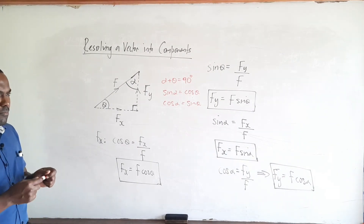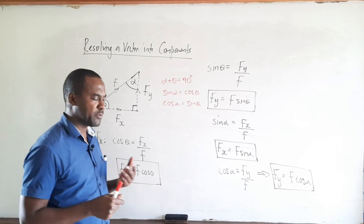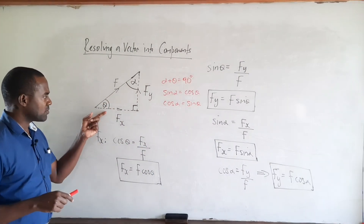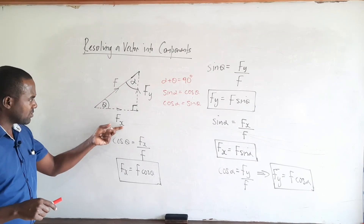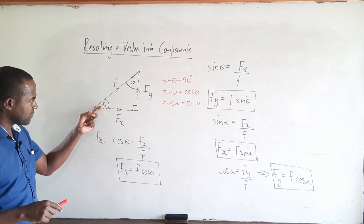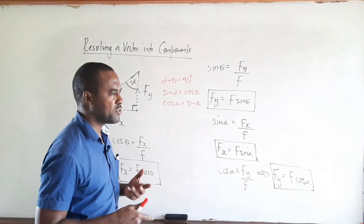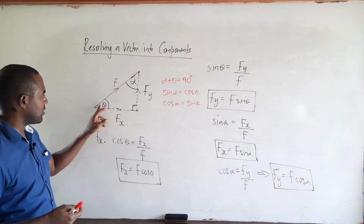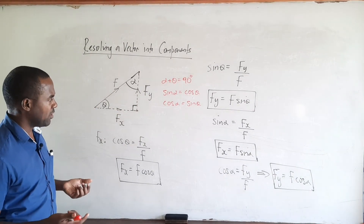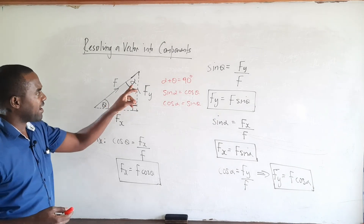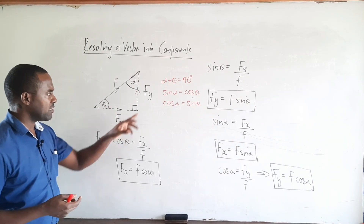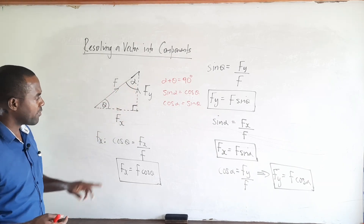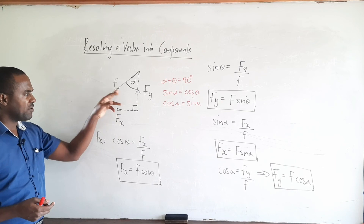So always remember: when resolving a vector into its components, the component adjacent to the angle is given in terms of the cosine of the angle — so Fx equals F cos theta. The other component is given in terms of the sine of the angle — so Fy equals F sin theta. Similarly, if using angle alpha, the component adjacent to alpha is Fy, so Fy equals F cos alpha, whereas Fx equals F sin alpha.